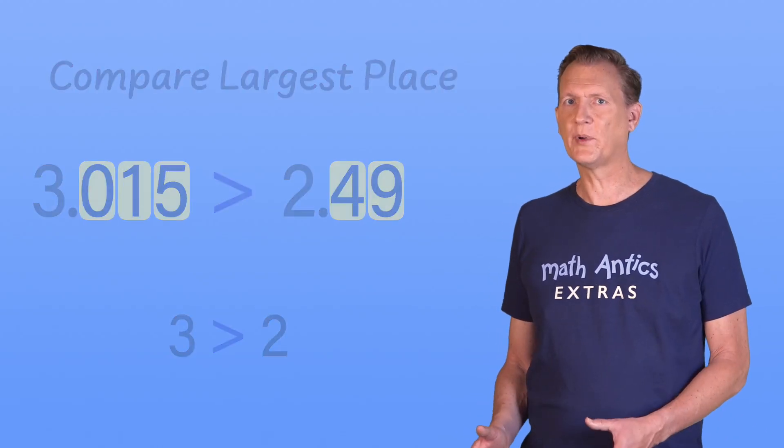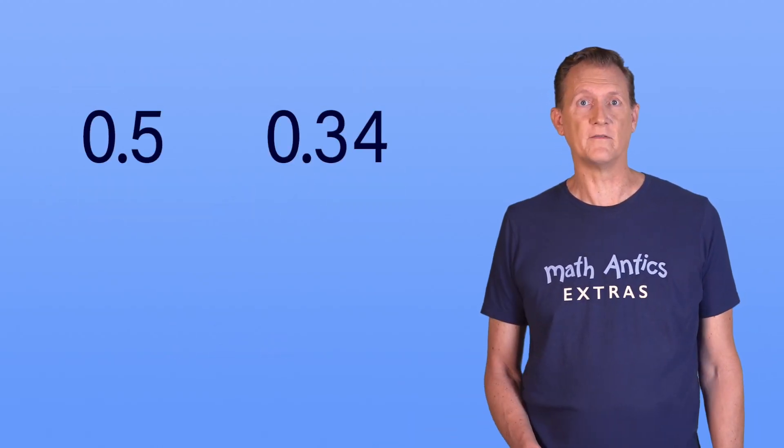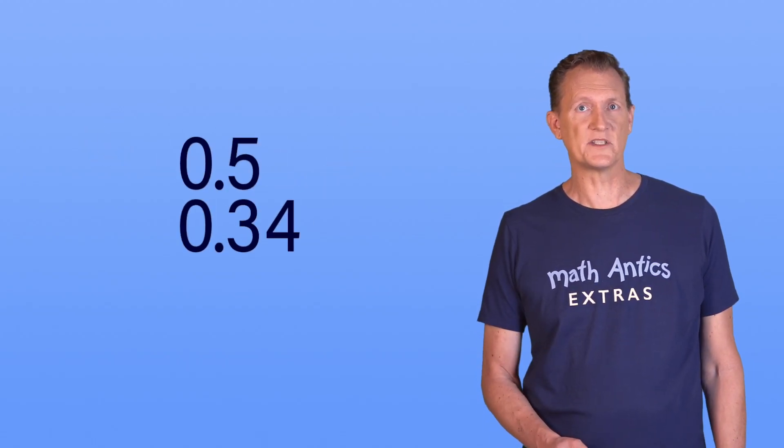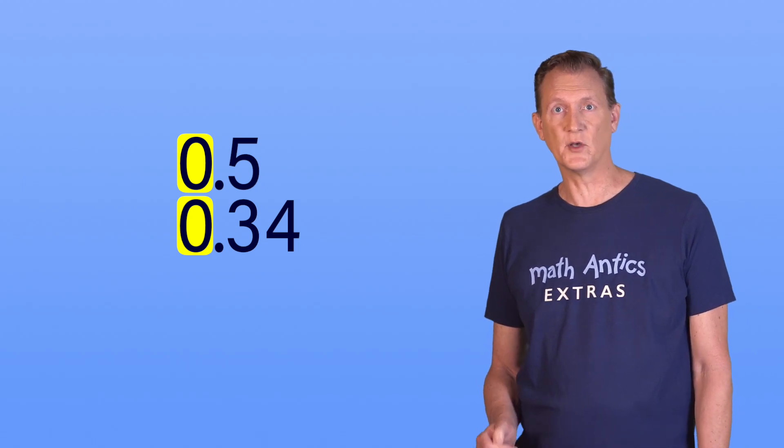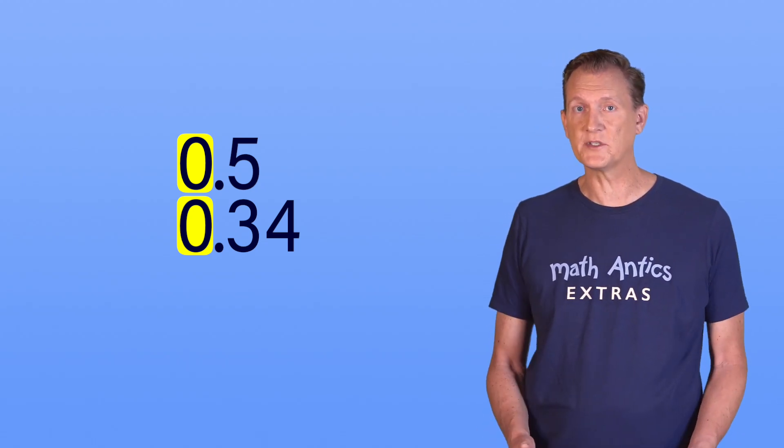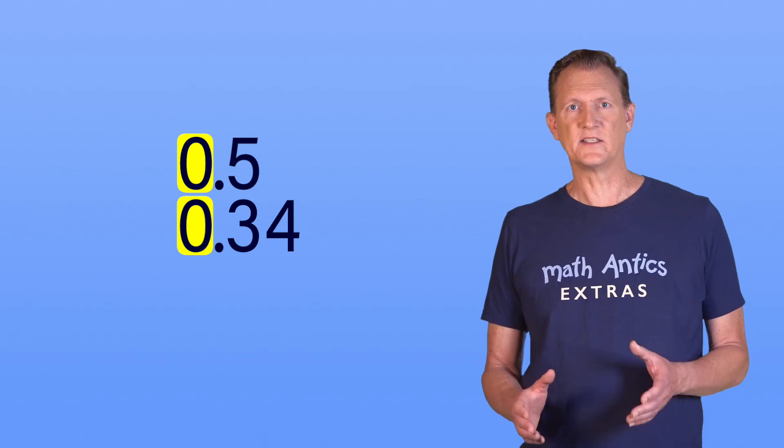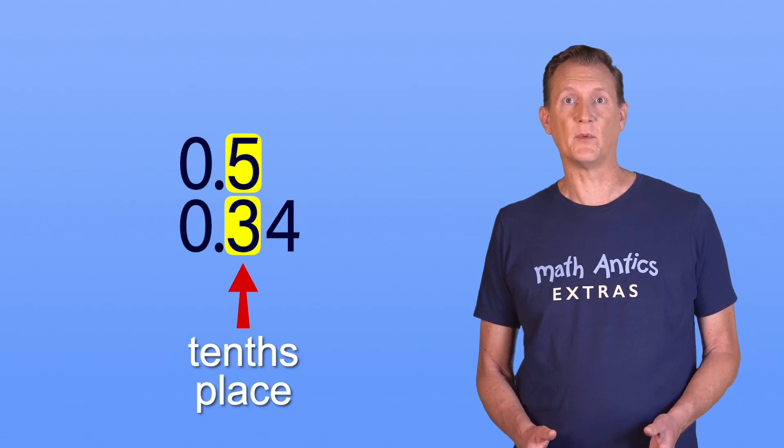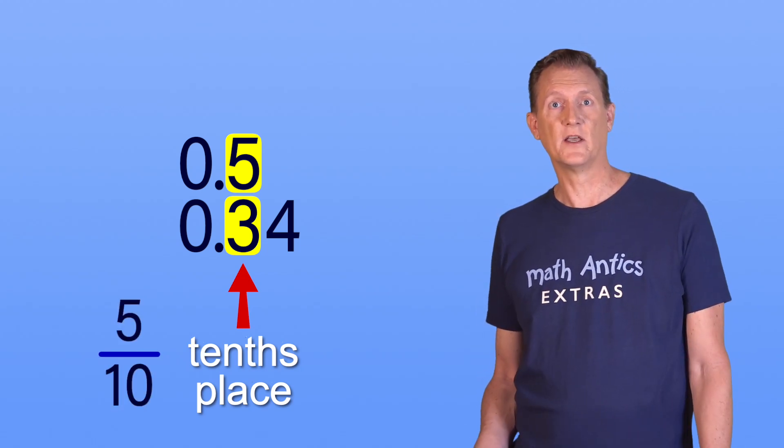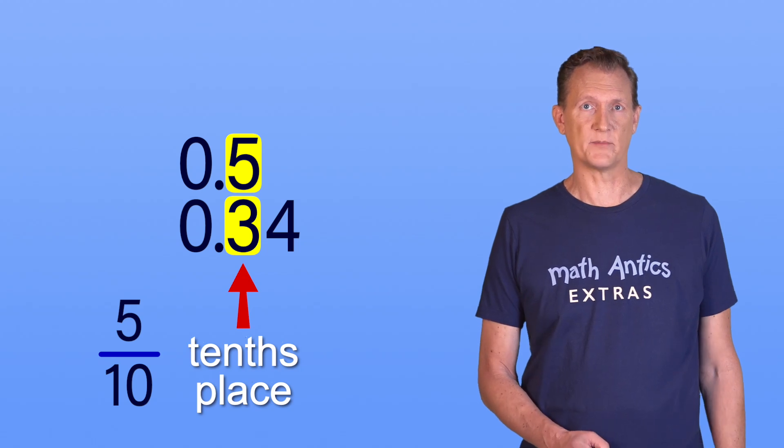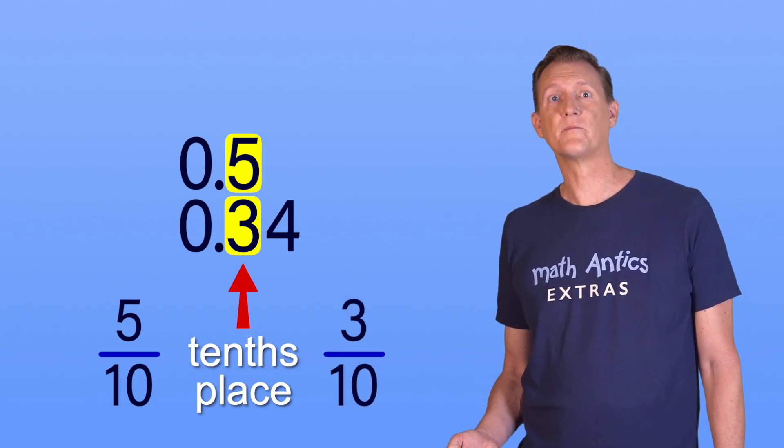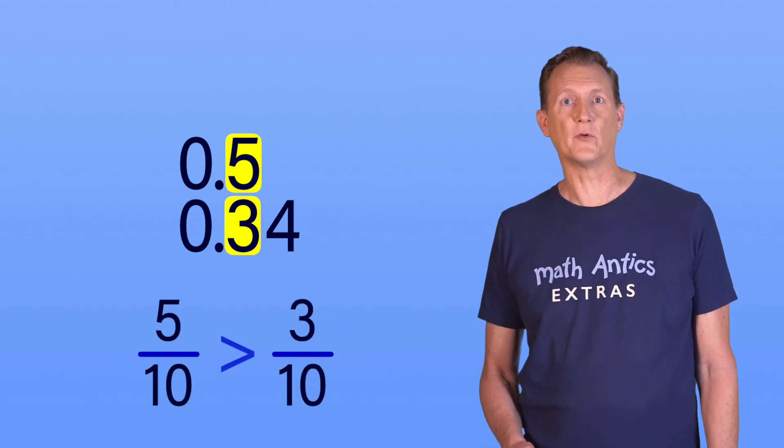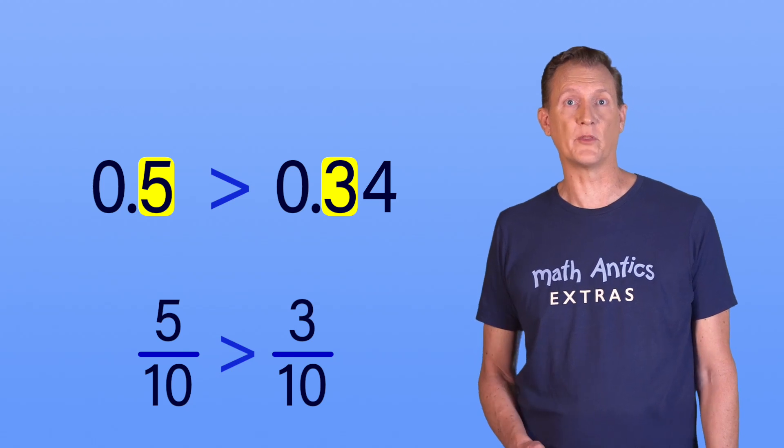But what if you have to compare two decimal numbers like these, 0.5 and 0.34? If we line up the decimal points, you'll notice that they each have a zero in the ones place. Since those digits are the same, we can't use them to tell which is bigger. Instead we need to shift to the next biggest number place, the tenths place. The first number has a 5 in the tenths place, representing 5 tenths, while the second number has a 3 in the tenths place, representing 3 tenths. 5 is greater than 3, which means that 5 tenths is greater than 3 tenths. Therefore, 0.5 must be greater than 0.34.